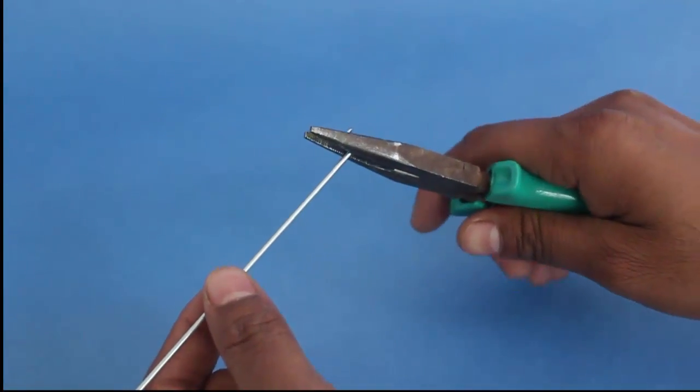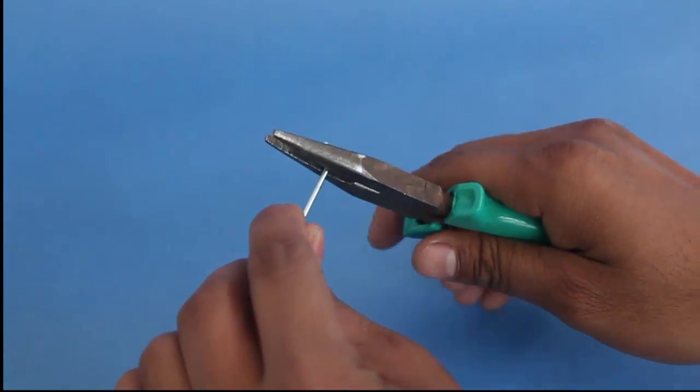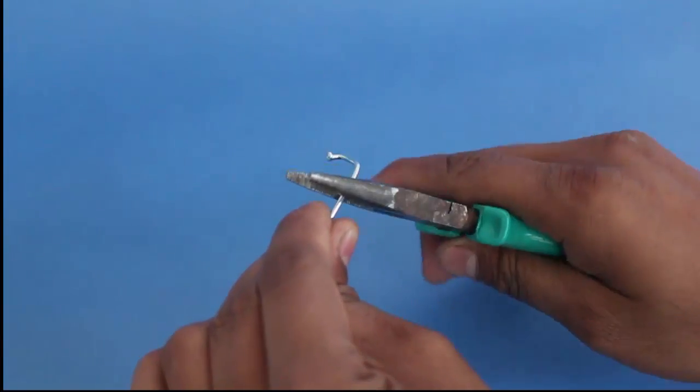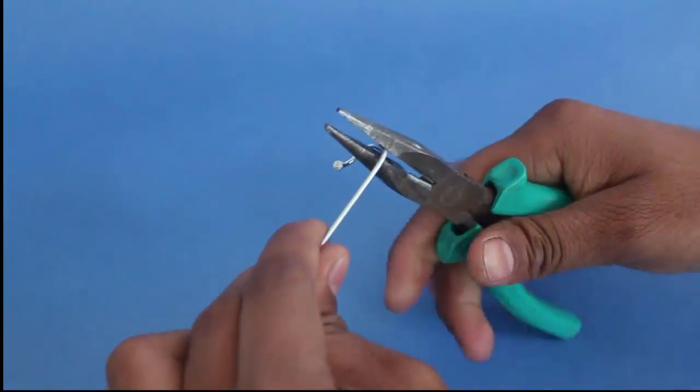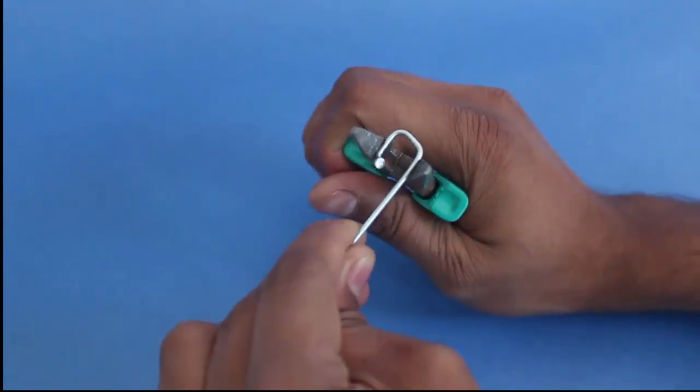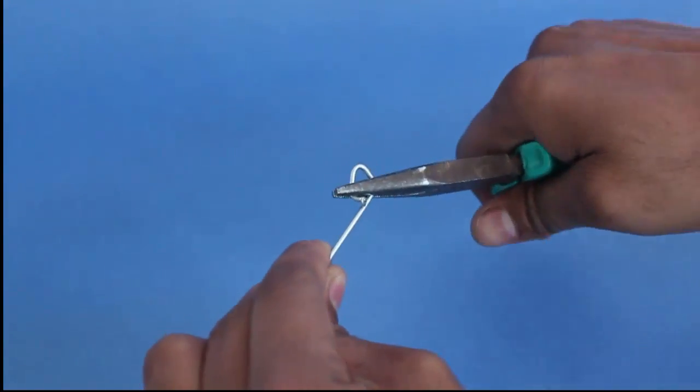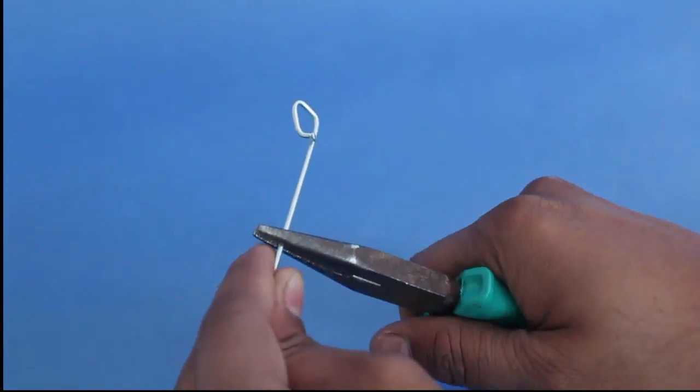First bend the end of the spoke into a square with the help of a plier. Two magnets will rest on the square. Then bend the spoke twice at right angles as shown.